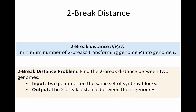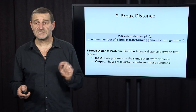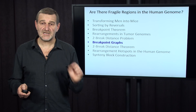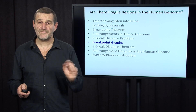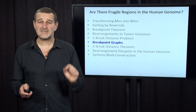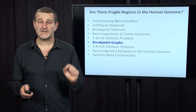We define the two-break distance as the minimum number of two-breaks transforming one genome into another. The two-break distance problem: given two genomes on the same set of synteny blocks, output the two-break distance between them. It's now time to solve this problem, but before we do, we need to introduce the key notion in studies of genome rearrangements: the breakpoint graph.